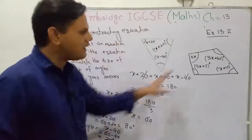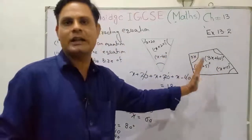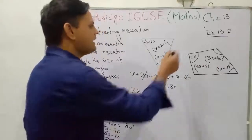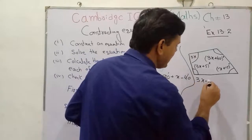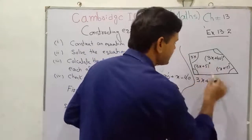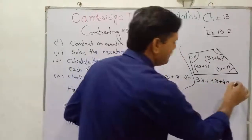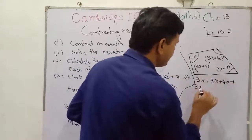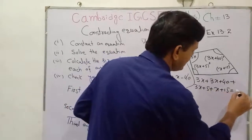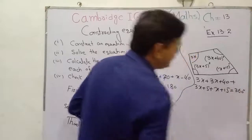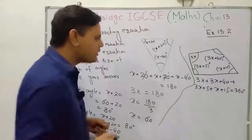The second question involves a quadrilateral. The sum of all angles in a quadrilateral is equal to 360°. So we write the sum of all the angles: 3x + 3x + 40° + 3x + 5° + x + 15° = 360°.